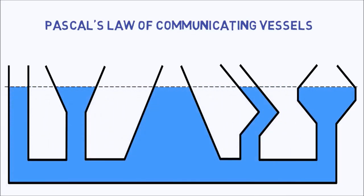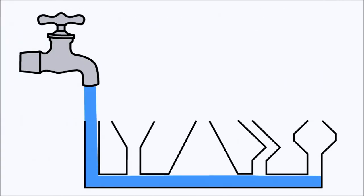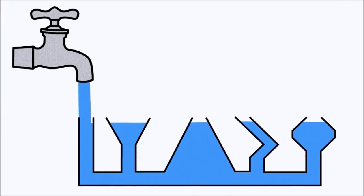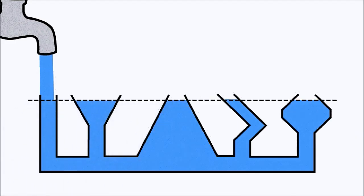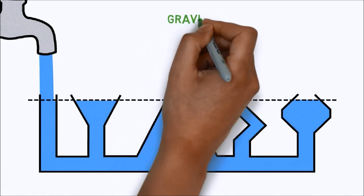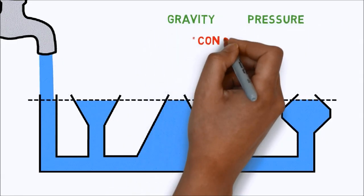If additional liquid is added to one vessel, the liquid will again find a new equal level in all the connected vessels. This process occurs because gravity and hydrostatic pressure are constant in each vessel.